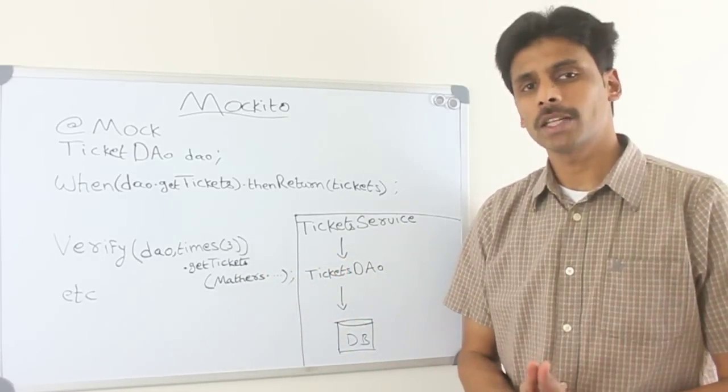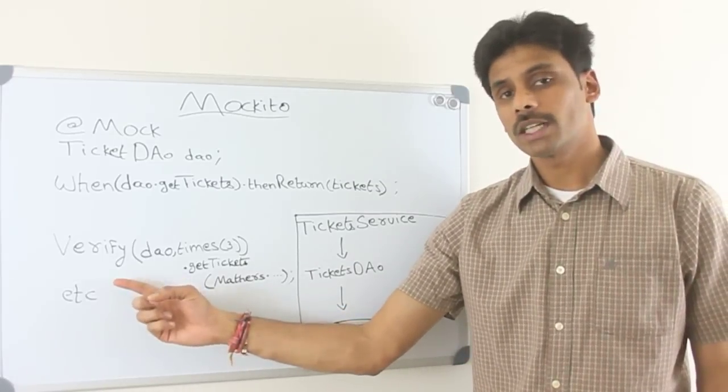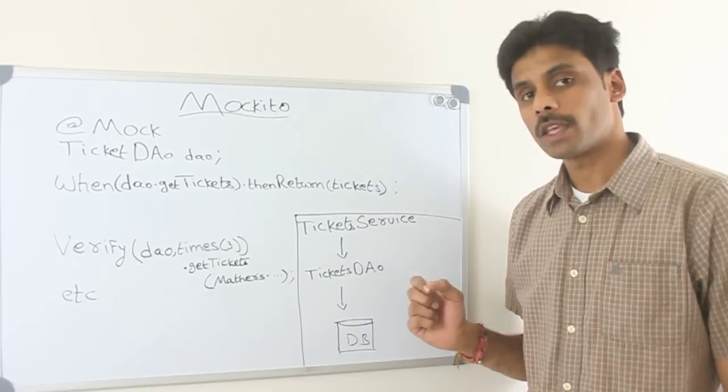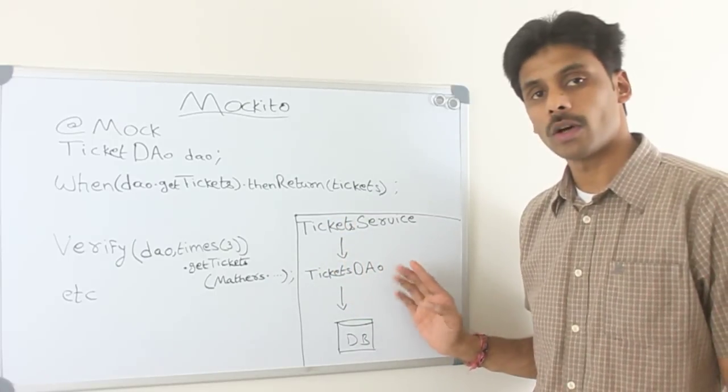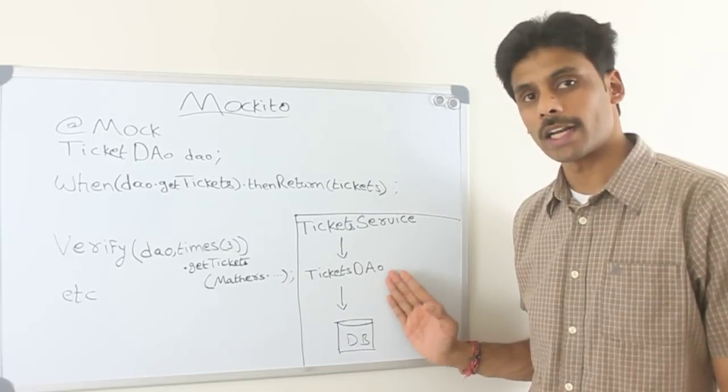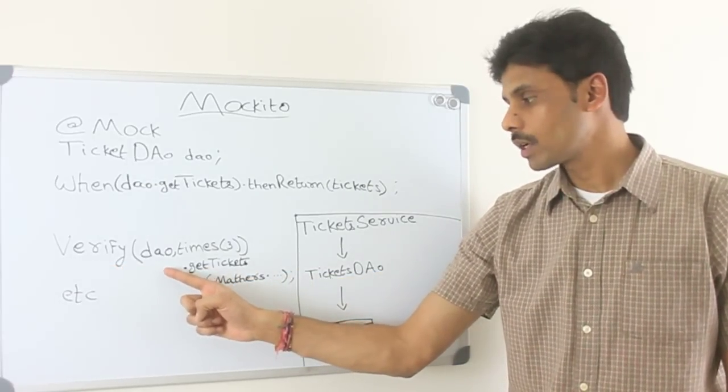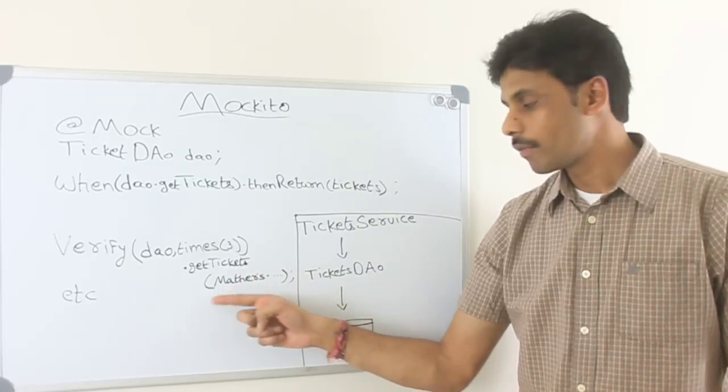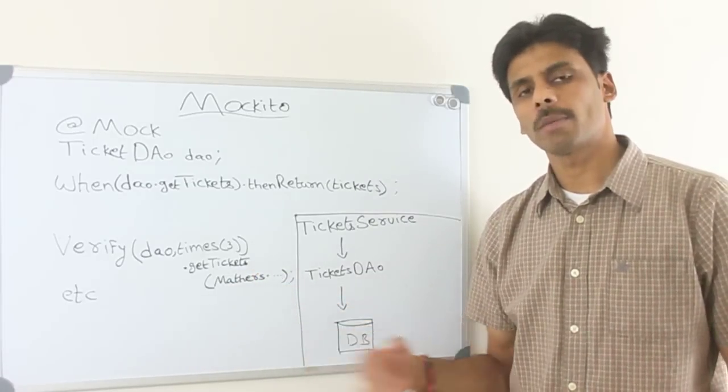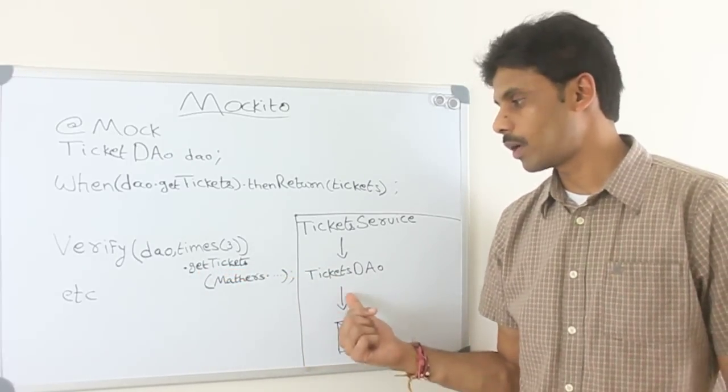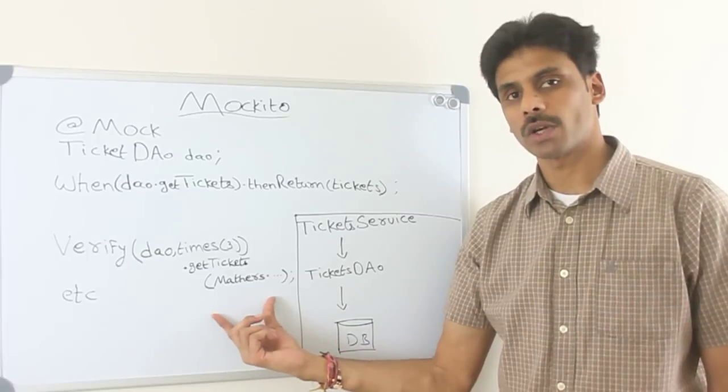Mockito also has several other static methods. One other very useful method is the verify method, which we can use to see if all the expected methods on the next layer object are getting called. So, here I am verifying if the DAO's getTickets method is called with the required parameters. We can check the parameter types as well, whether this particular getTickets method has been called with all the matching parameters or not.